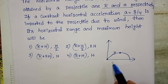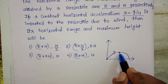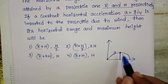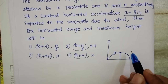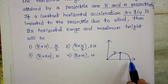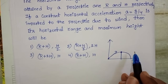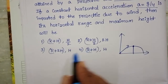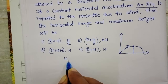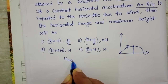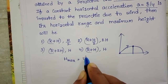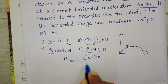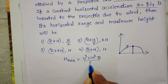Maximum height depends upon the vertical acceleration. It does not vary due to the horizontal acceleration, so maximum height remains constant. The maximum height formula is u² sin²θ / 2g.